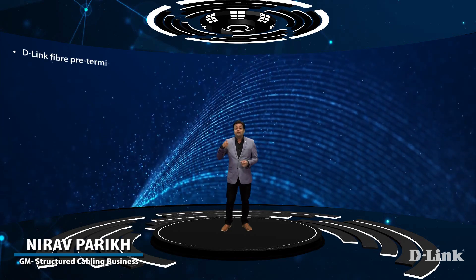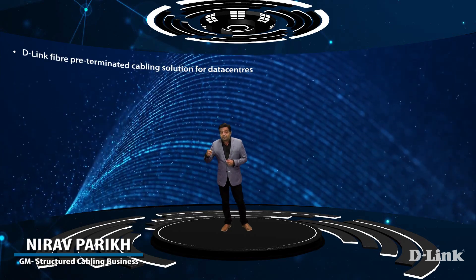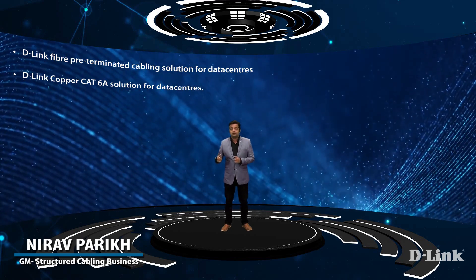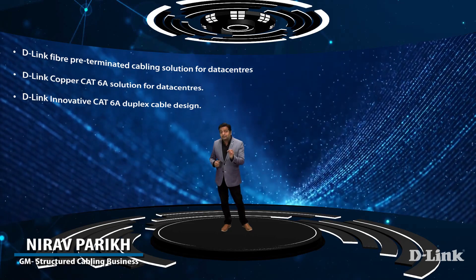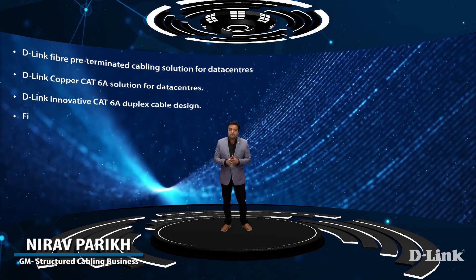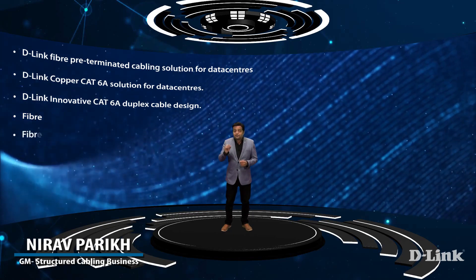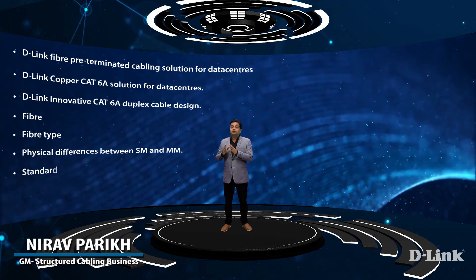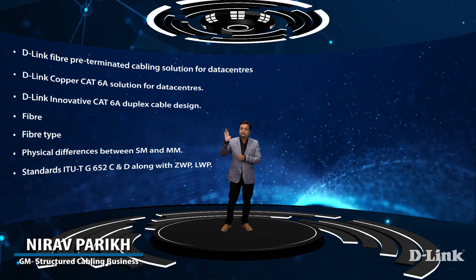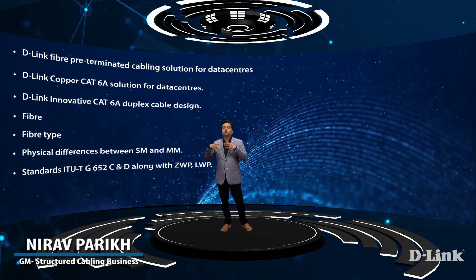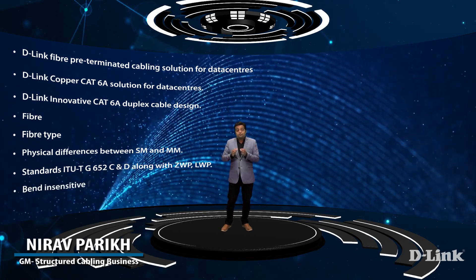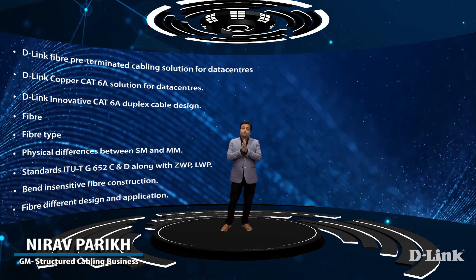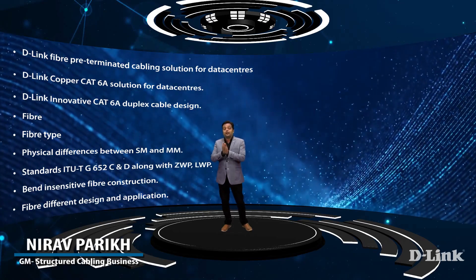Today's agenda covers: D-Link fiber pre-terminated cable solution for data center; D-Link copper CAT 6A solution for data center; D-Link innovative CAT 6A duplex cable design; and in the fiber section — types of fiber, physical differences between single mode and multi-mode fiber, standards like ITU-T G652C and D along with zero water peak and low water peak fiber, bend-insensitive fiber construction, and different types of fiber cable construction design and their applications.